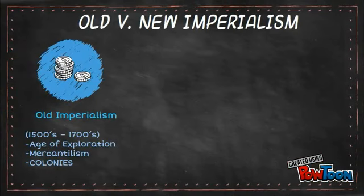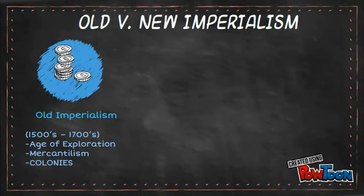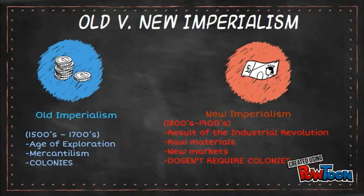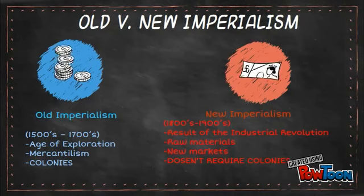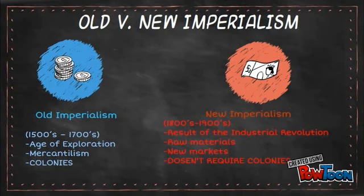We've already been studying what's called the old imperialism — that period from the 1500s to the 1700s that includes the age of exploration, the mercantile system with triangular trade, and the owning of colonies by European nations. But now we're getting into what's called the new imperialism of the 1800s and early 20th century, and it's really a result of the Industrial Revolution. We'll talk about raw materials and new markets, and it doesn't necessarily mean you have to own colonies or own the lands you're dominating.